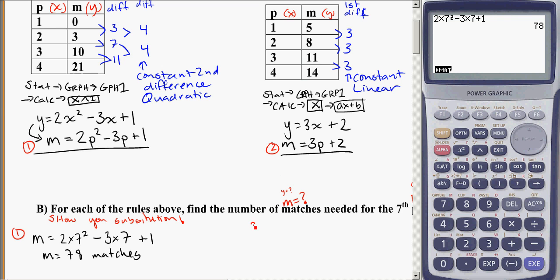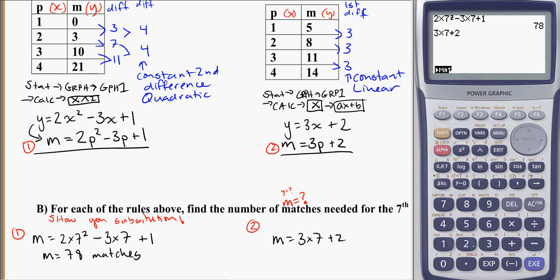For the linear equation, again, showing my substitution, I know that I'm using p is equal to seven. So instead of writing, m is equal to three times p plus two, I'm going to say, m is equal to three times seven plus two. Putting that into our calculator, three times seven plus two, we get 23. So m is equal to 23 matches in this case.